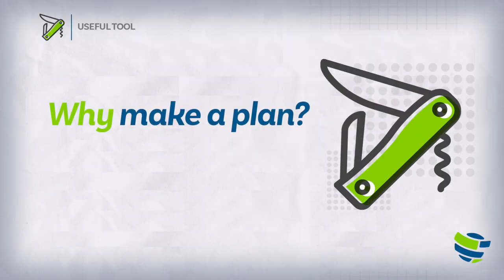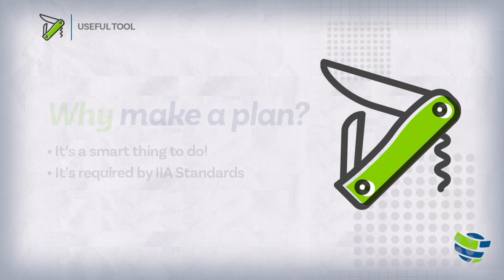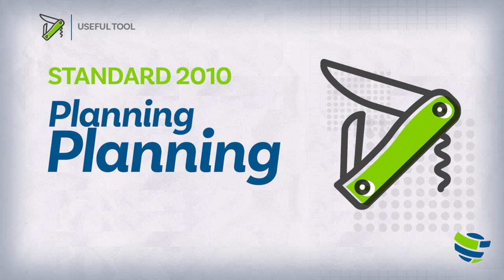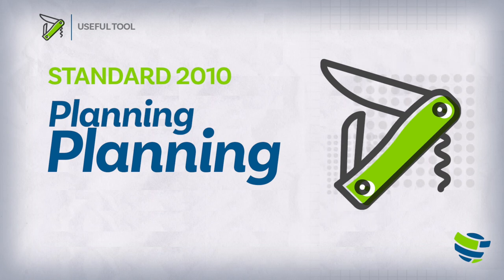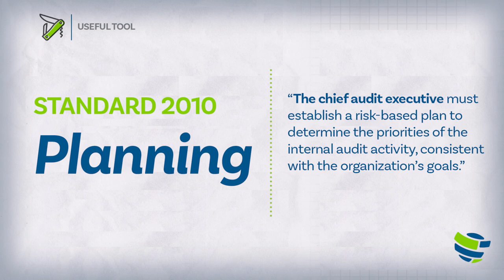Why do you need to make a plan? Well, aside from being a smart thing to do before starting any project, an audit plan is required by IIA standards. As with most things internal audit, the International Standards for the Professional Practice of Internal Auditing is the go-to tool and your North Star for this process. Standard 2010 states that planning expressly requires the CAE to develop an audit plan. The Chief Audit Executive must establish a risk-based plan to determine the priorities of the internal audit activity consistent with the organization's goals.